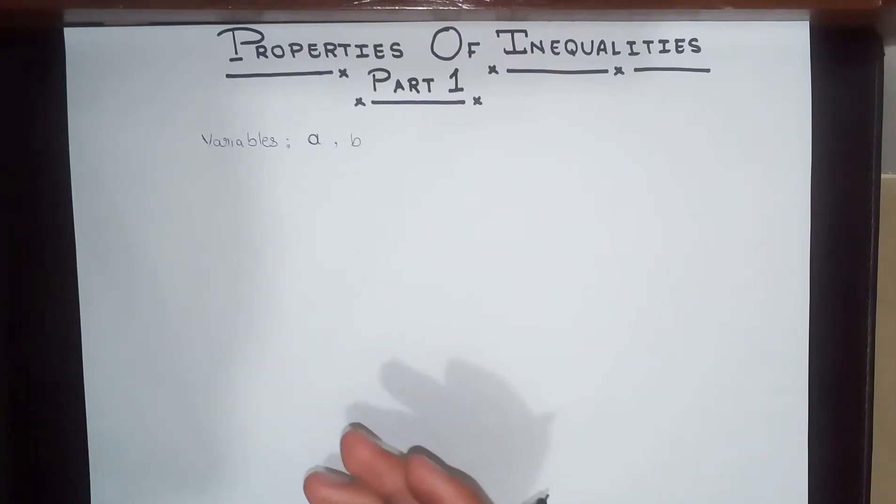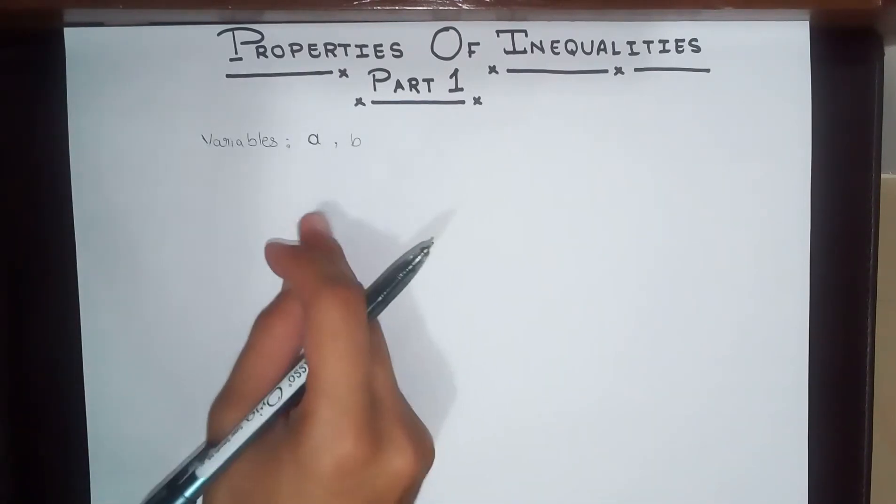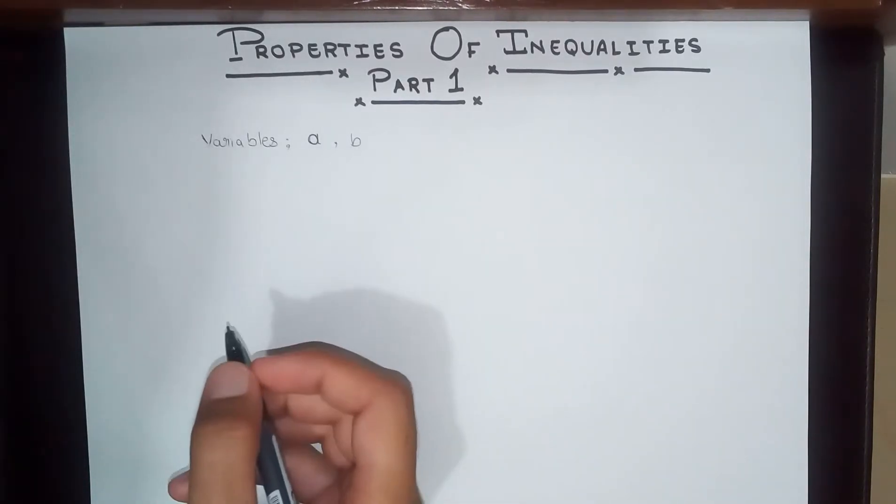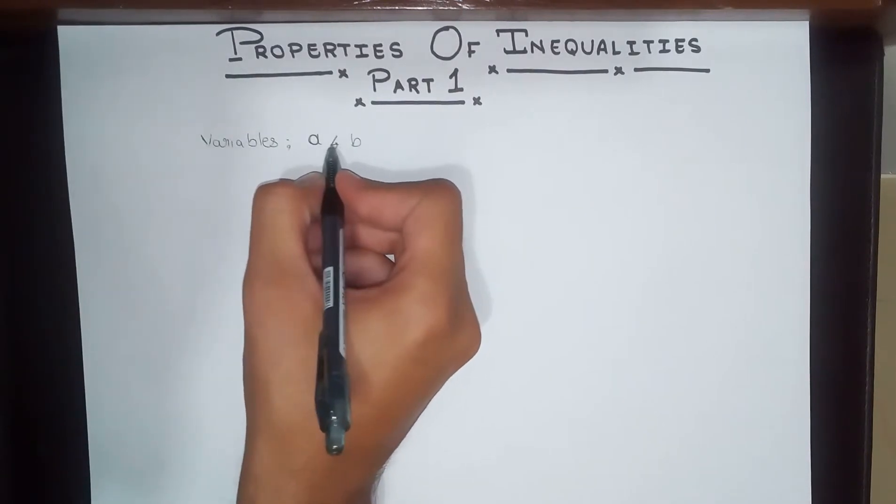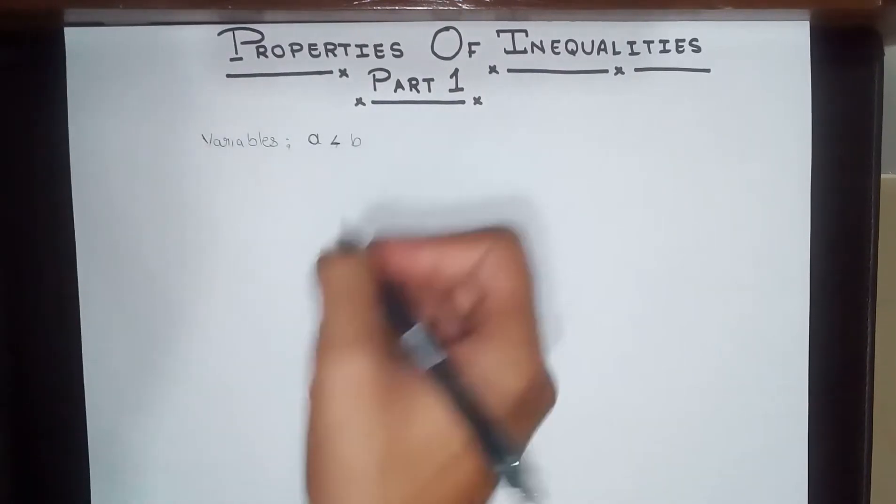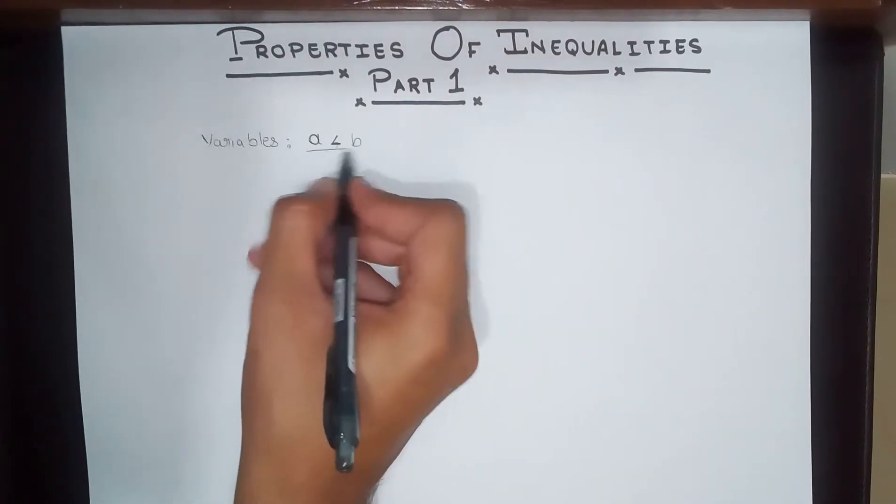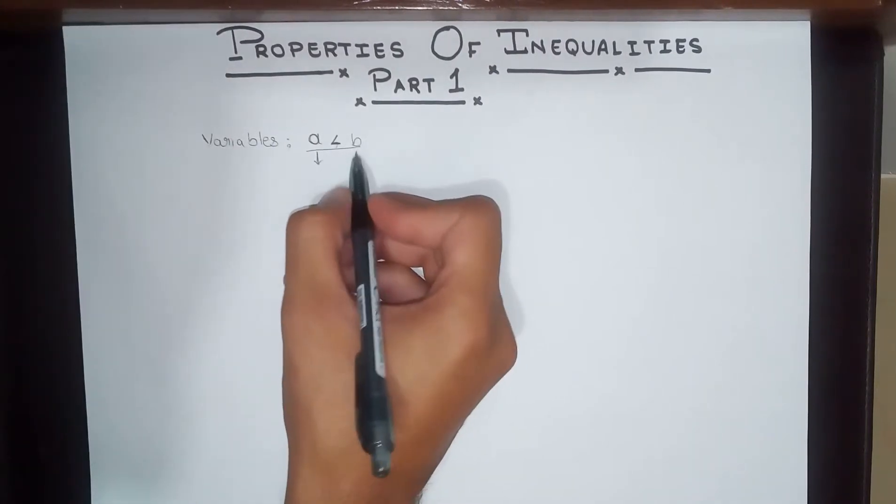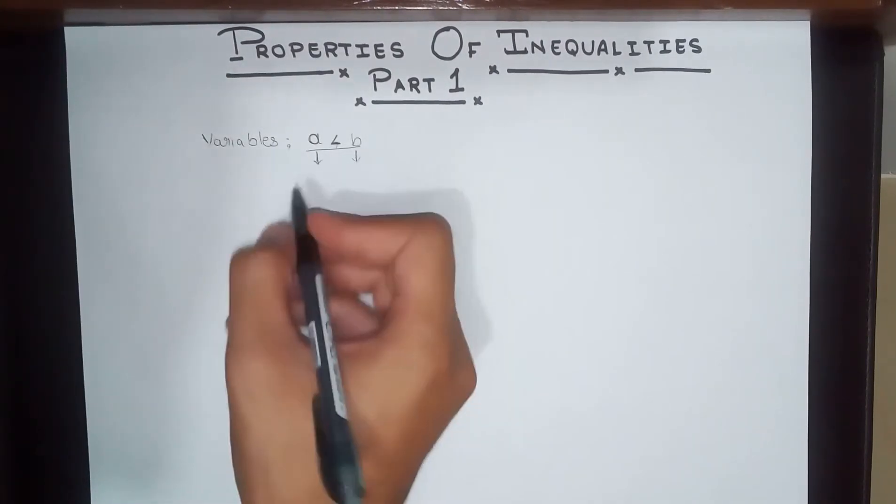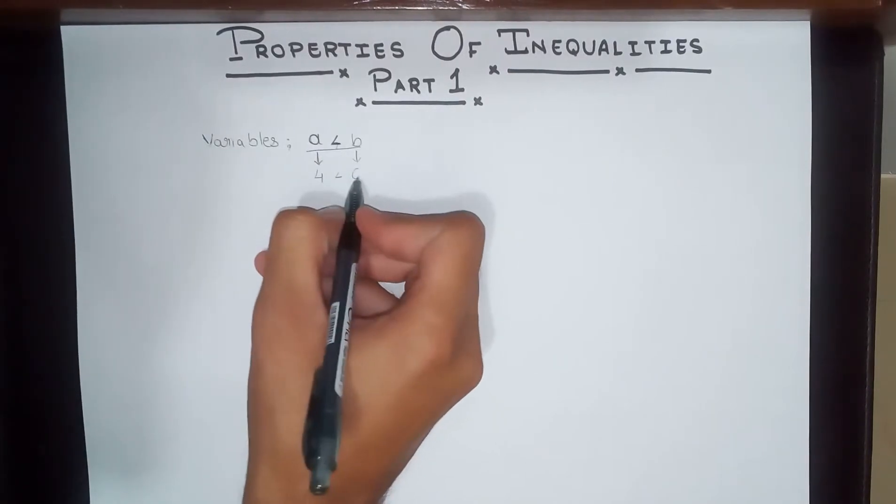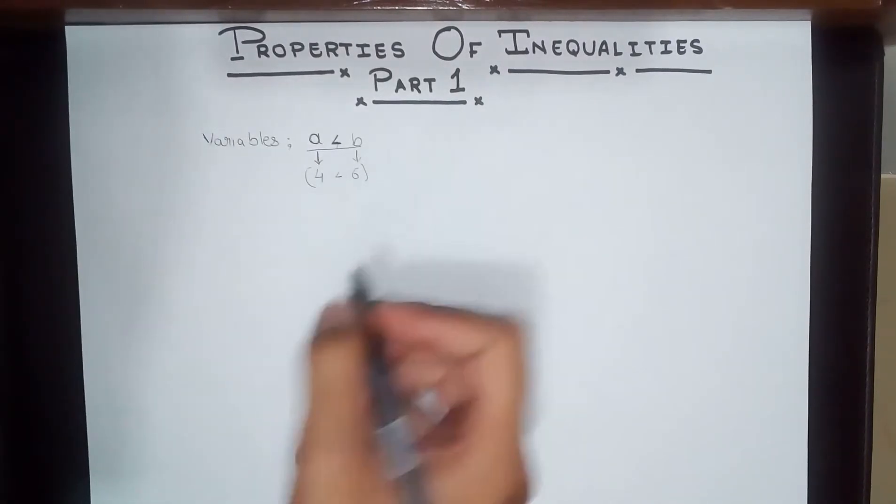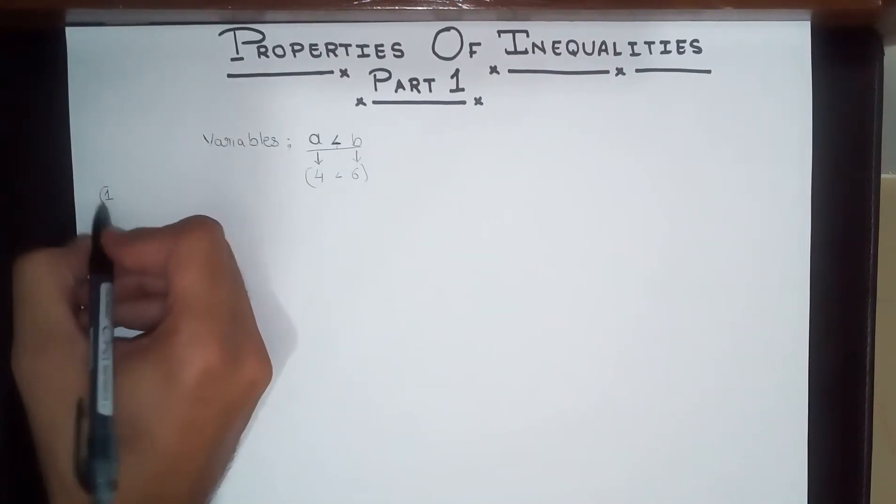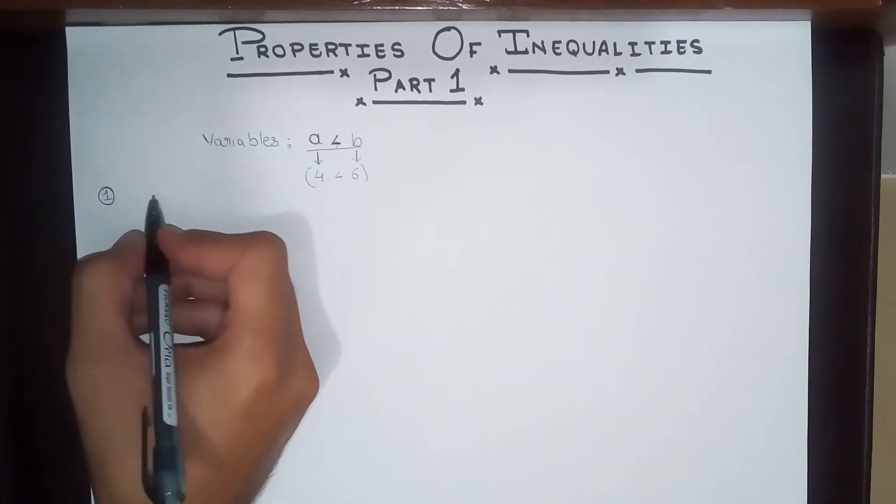The three properties I'm going to be discussing will use general terms. Variable B is going to be bigger than variable A. For specific purposes, to give the definition some solid ground, we will be using these numbers: six is bigger than four. Let's begin with the first property.